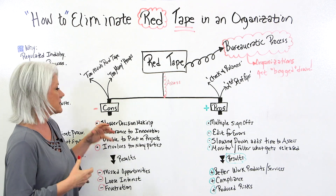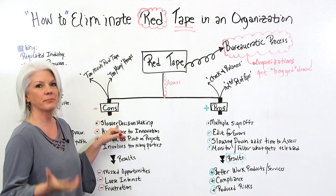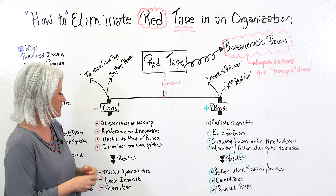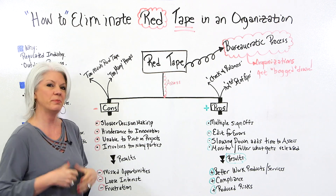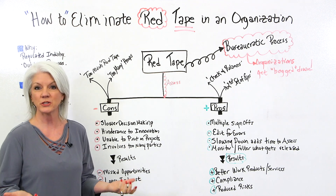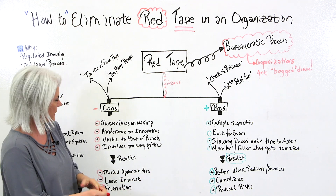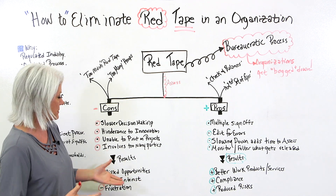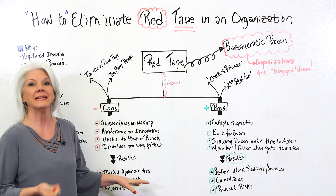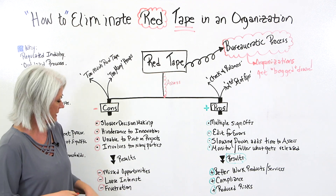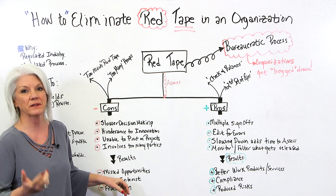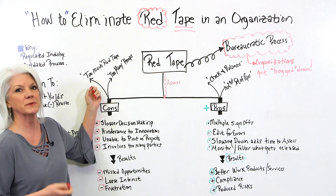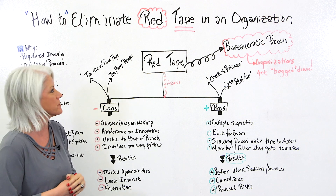Let's talk about some of the cons. Some of the cons are it provokes slower decision making. It's a hindrance to innovation because of bogging things down. You're unable to pivot on certain projects because of so much red tape — it just can't happen very quickly. It involves too many parties to decide what to do and getting those sign-offs. So the results are, many times, missed opportunities. The teams or organizations — the people involved — lose interest, and there's a lot of frustration.